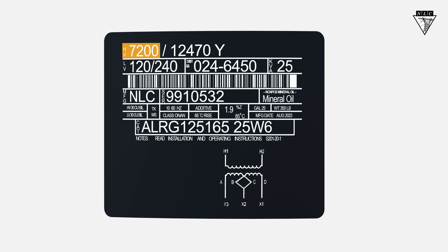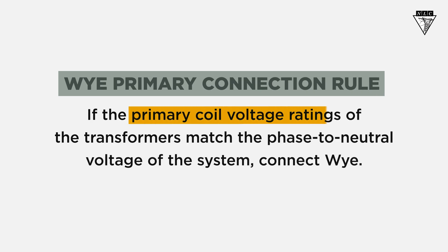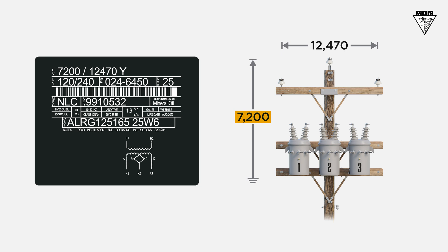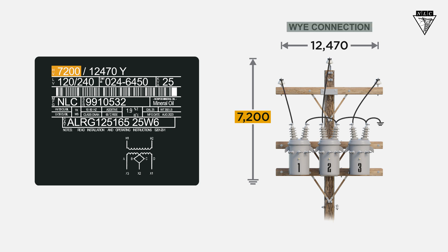To determine our connection, let's consider the Y primary connection rule. If the primary coil voltage ratings of the transformers match the phase-to-neutral voltage of the system, connect Y. Here, our phase-to-neutral voltage matches the primary coil voltage rating on the transformer of 7200 volts, so we'll connect the transformers as Y.